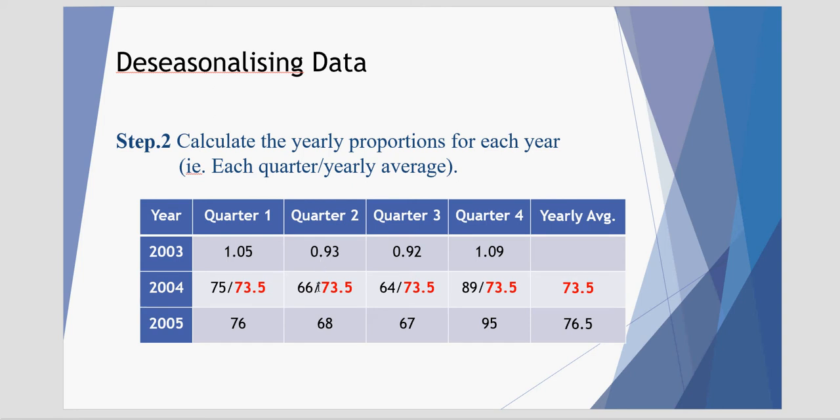Second quarter, we take 66,000 and divide it by 73.5 thousand, for all four quarters. And we have the yearly proportions for 2004. We repeat this for 2005, whereby each quarter is divided by the yearly average of 76.5.